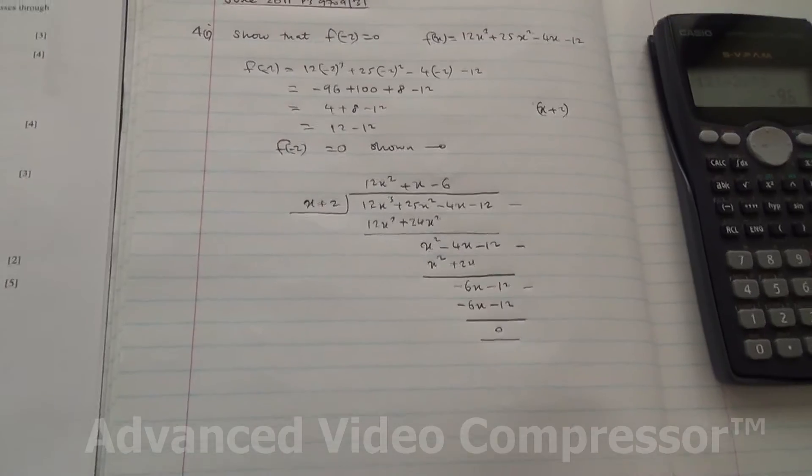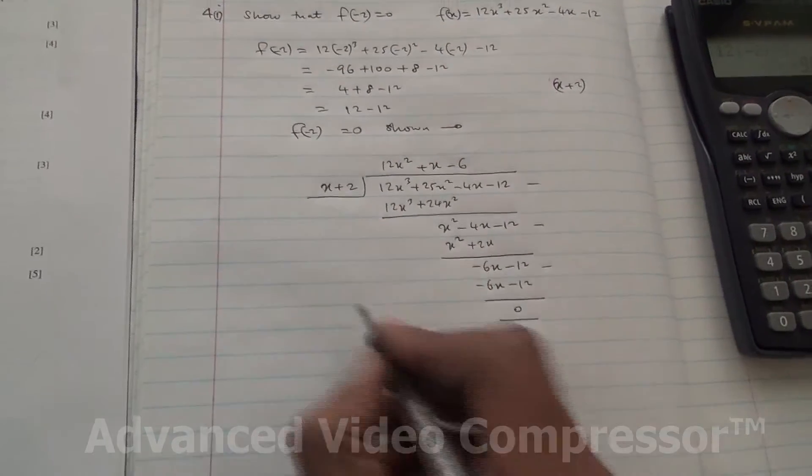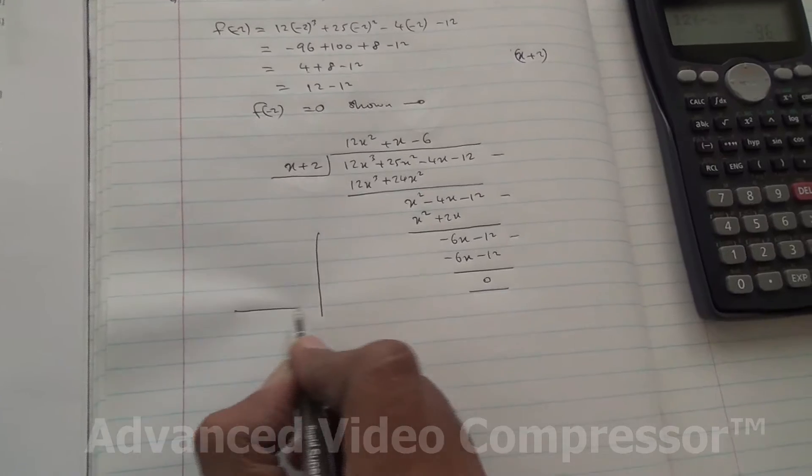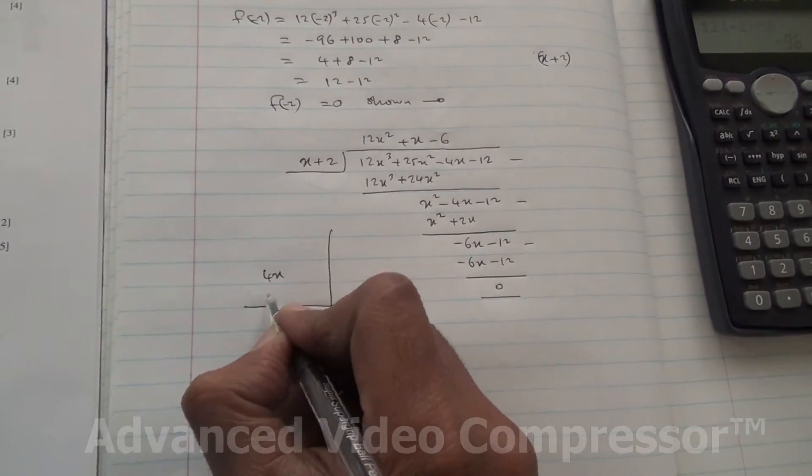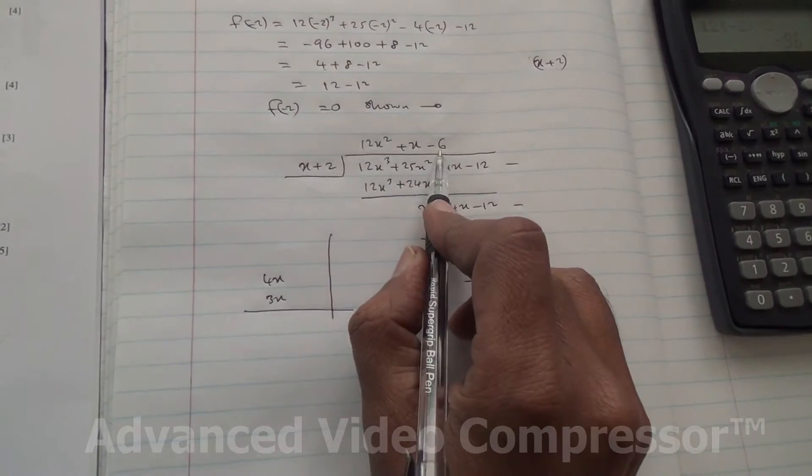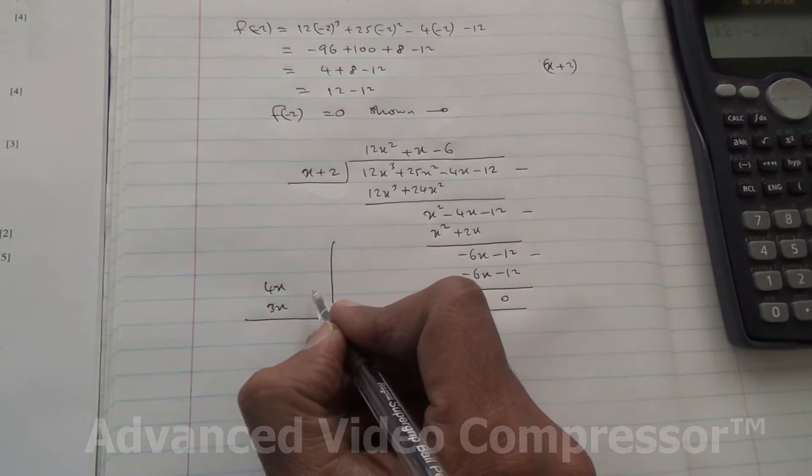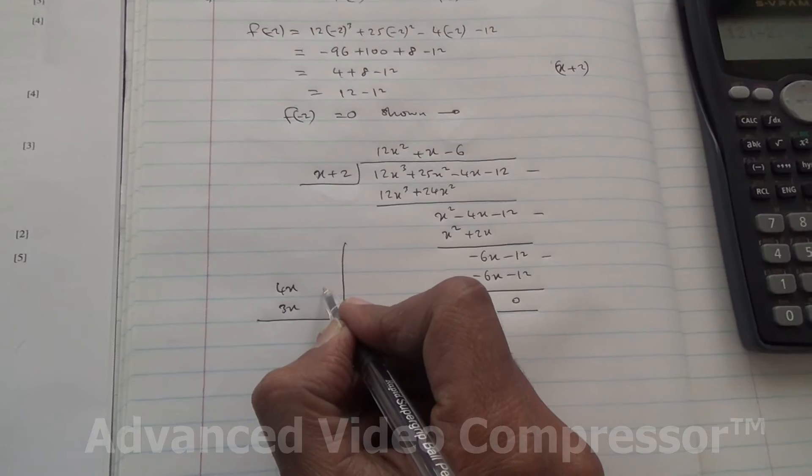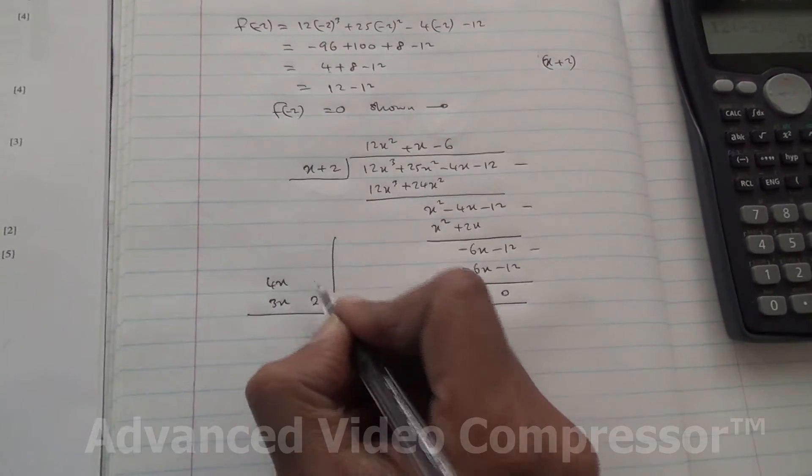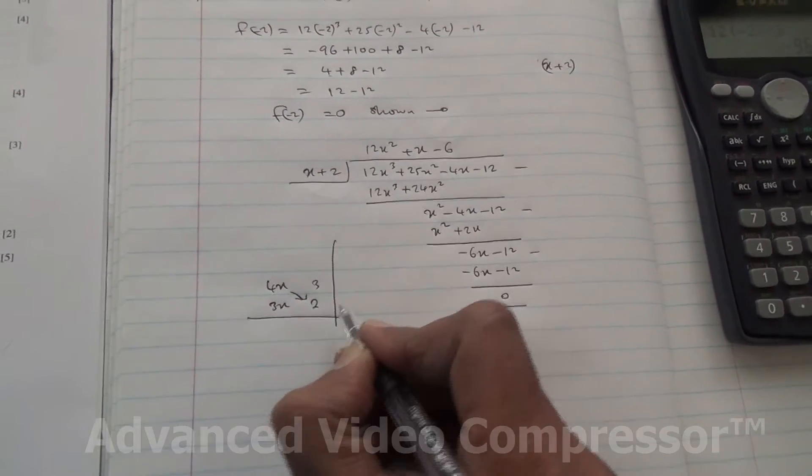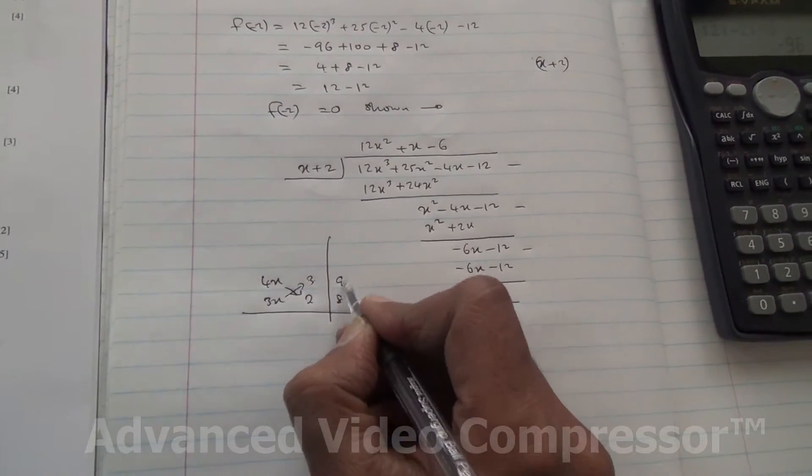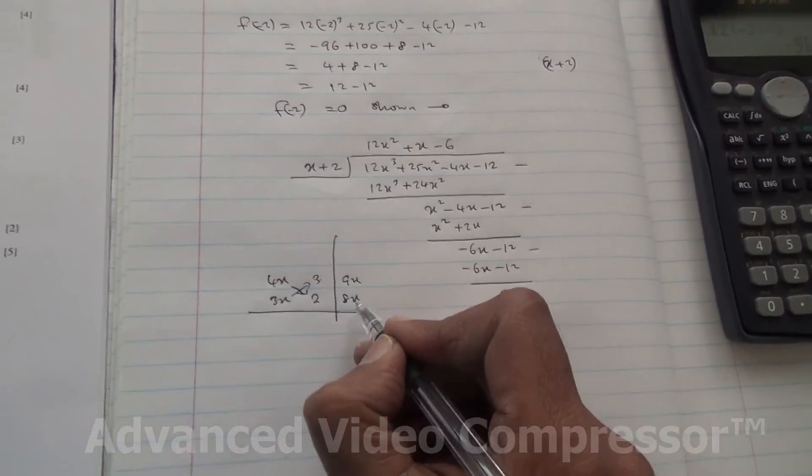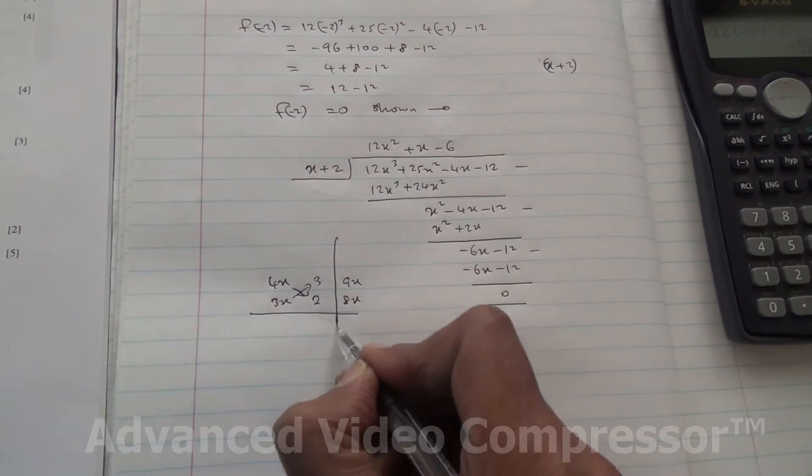So now, where do we go from here? We need to factorize this expression. So this one here, it's going to be 12, which is then 4x times 3x. And you have got 6, therefore we are going to say 2 times 3 is 6. So I am going to say 2 here, 3 here. So 4 times 2 is 8x. 3 times 3x is 9x. So 9x take away 8x is going to be x, and we have x here.